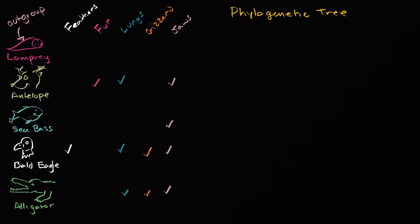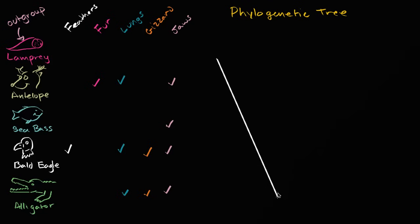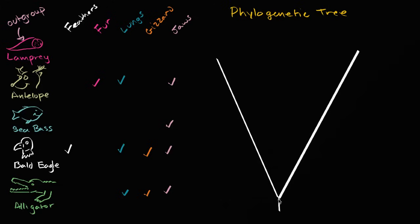So let me start to draw this tree. Deep into the past, there is a branching-out point where you have the common ancestor of the lamprey and everything else we see here. Eventually, you have that common ancestor, and there are many, many species along the way, and eventually we get a lamprey in present time.